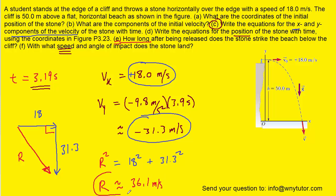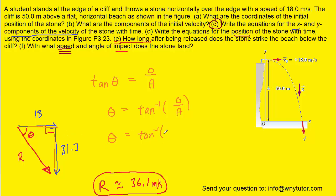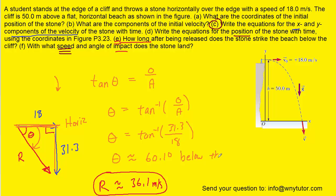We are also asked for the angle. From this right triangle, we have the opposite side (31.3) and the adjacent side (18) labeled. The tangent of an angle in a right triangle equals opposite over adjacent, so the angle is the inverse tangent of 31.3 over 18, which turns out to be roughly 60.1 degrees. The angle points below the horizontal, so the final direction of the stone at impact is 60.1 degrees below the horizontal.